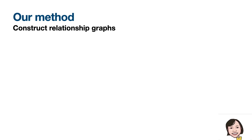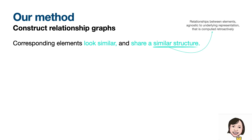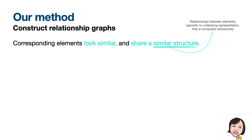Let me briefly talk about the gist of our method. There are two types of information to consider: first, are the individual elements similar? And second, do they share a similar structure? By similar structure, I don't mean the underlying representation in an SVG or a DOM. Instead, we define our own notion of structural similarity based on relationships of elements that can be computed retroactively.